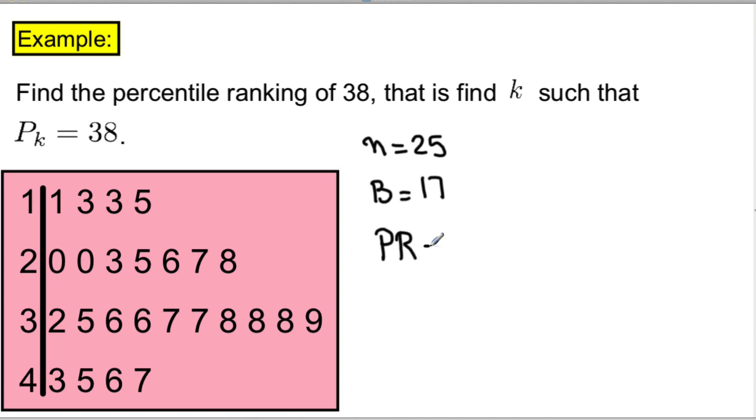So the percentile ranking would be 17 for B divided by 25 for n times 100. Once we simplify this, PR is equal to 68.